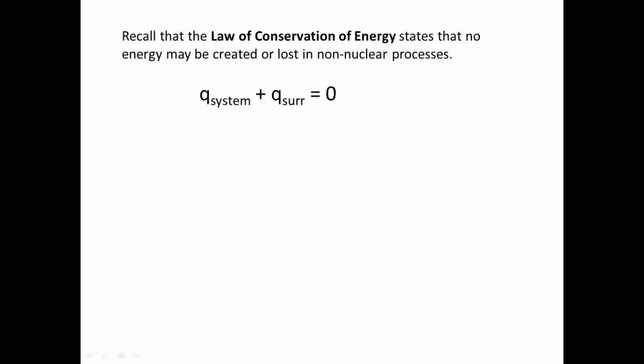Any energy that's given off by one is going to be absorbed by the other. So we can rearrange our equation as the Q of our system is equal to the negative Q of our surroundings. The values are going to be equal, they're just going to have opposite signs. So if we had a system where we took a hot metal and we add it to cold water, the energy is going to exit from the metal into the water. And if we write an equation to represent this, it is that the Q of the metal plus the Q of the water is equal to zero.